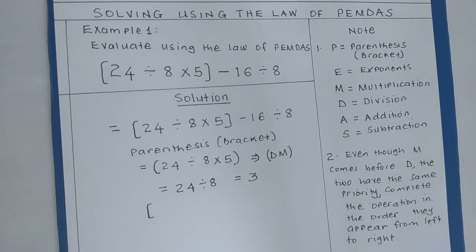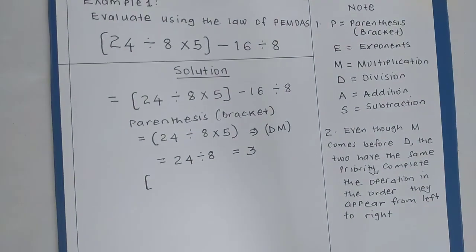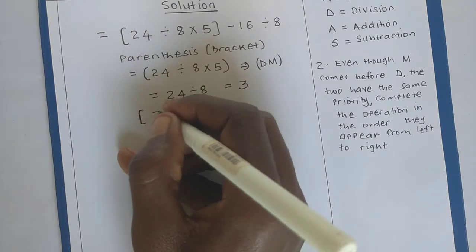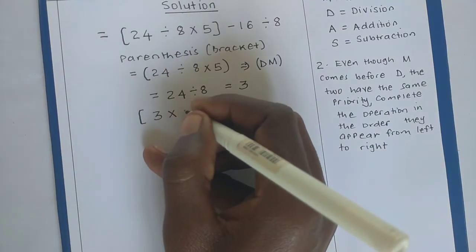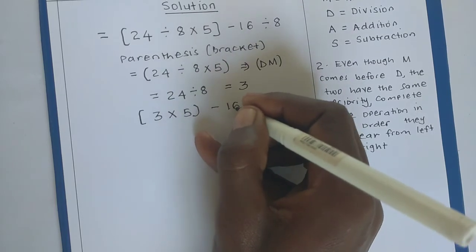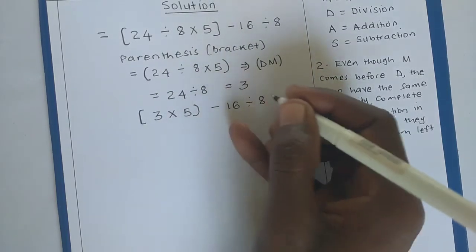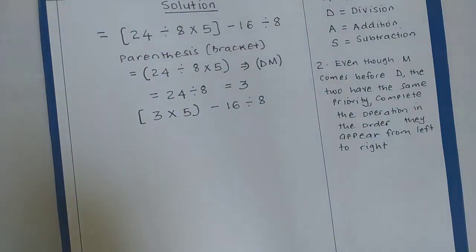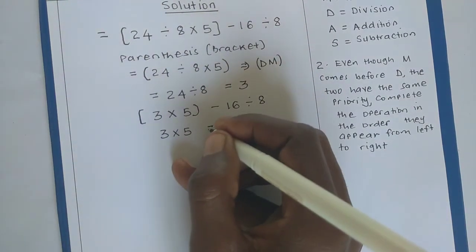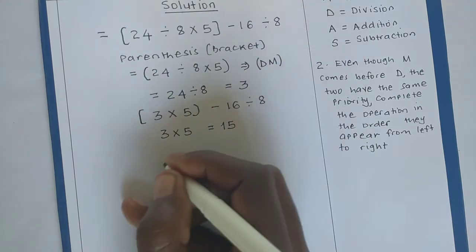What is inside the bracket now: we shall have 3 × 5, then we minus 16, then we divide by 8. Now, let's multiply. 3 × 5, we get 15. Meaning,